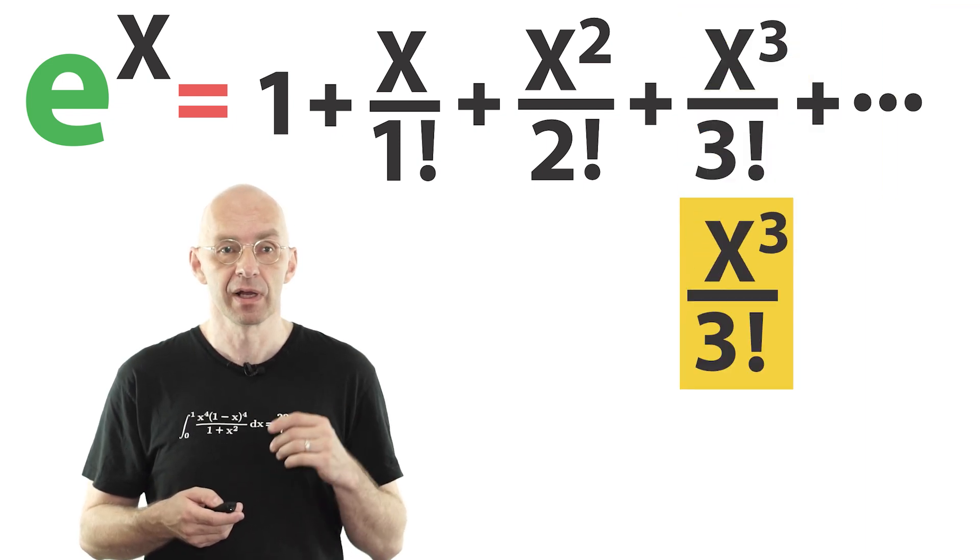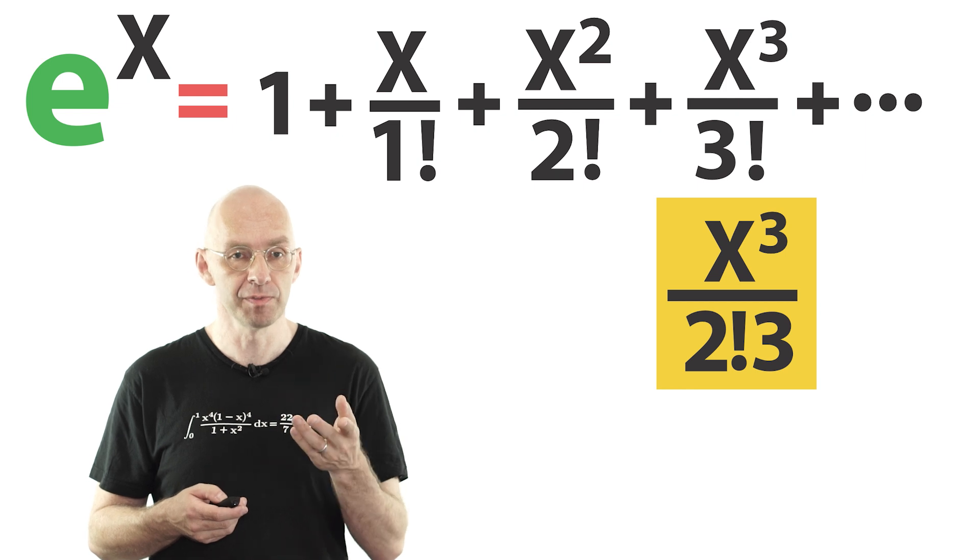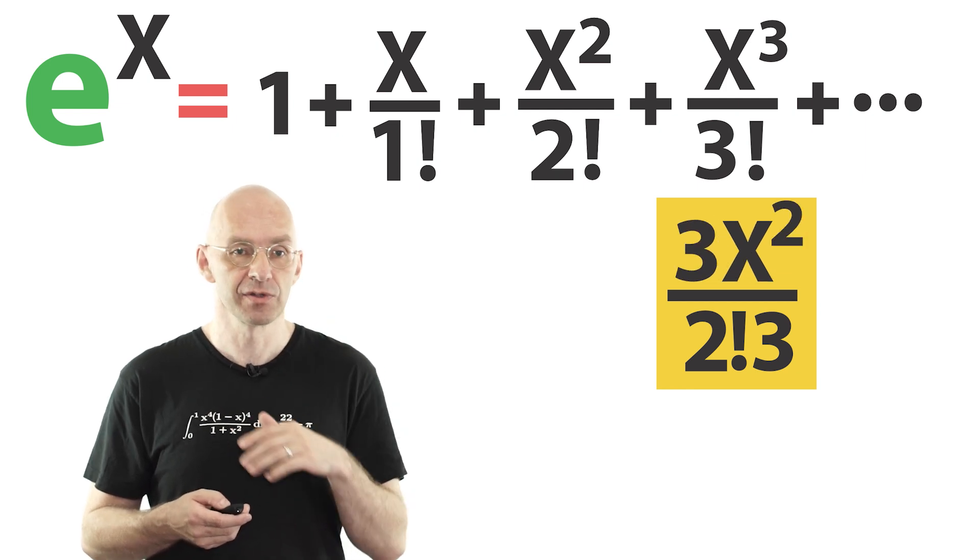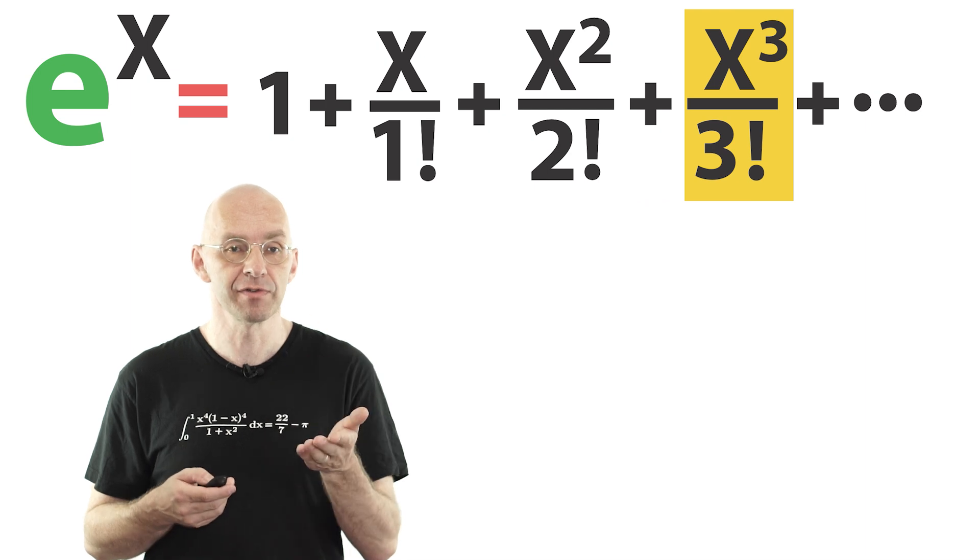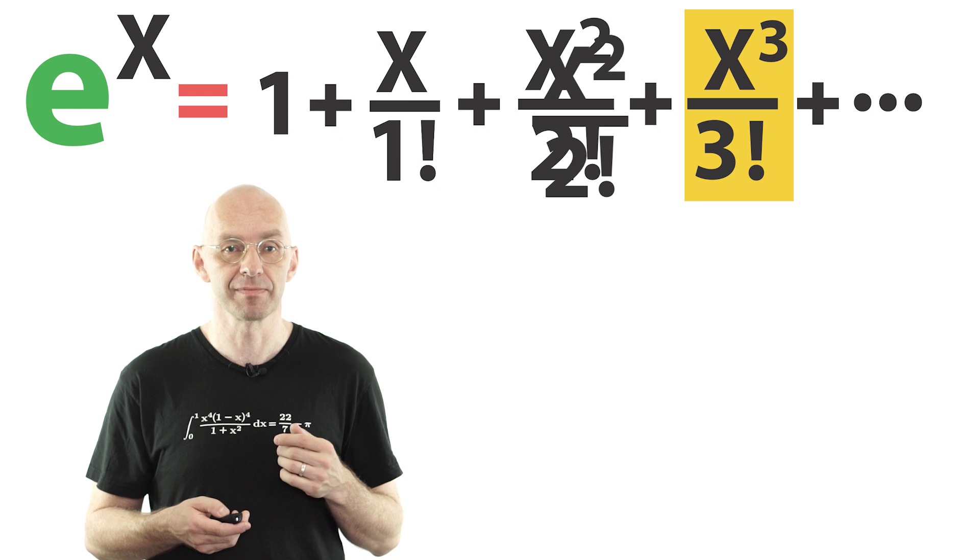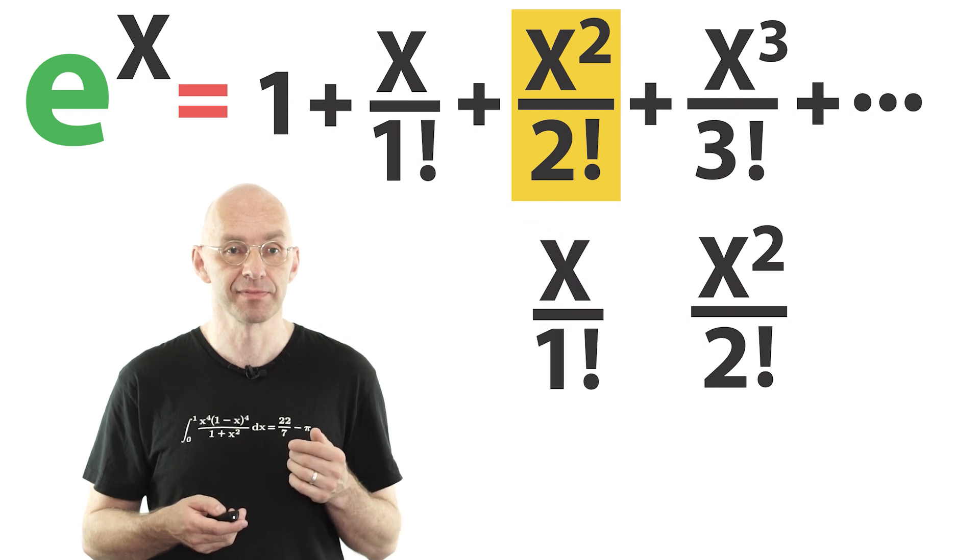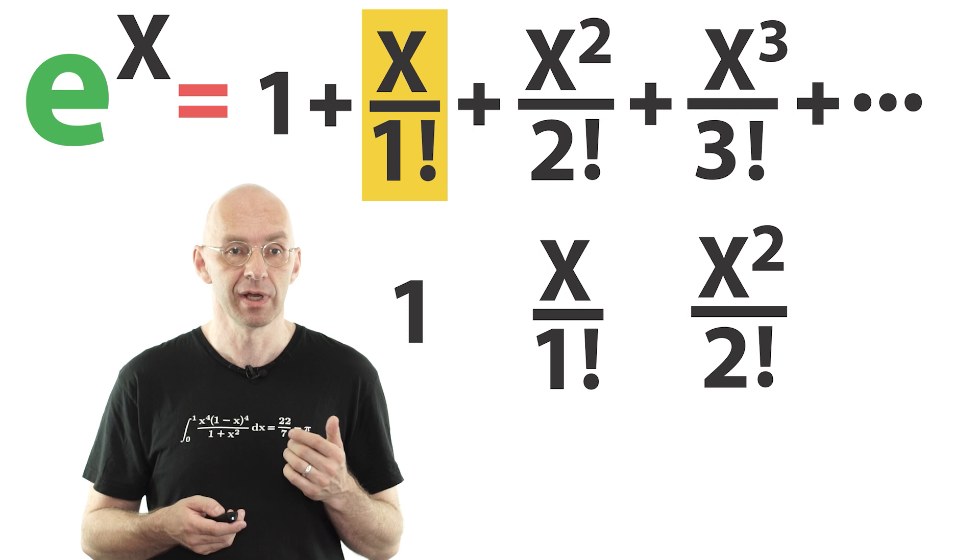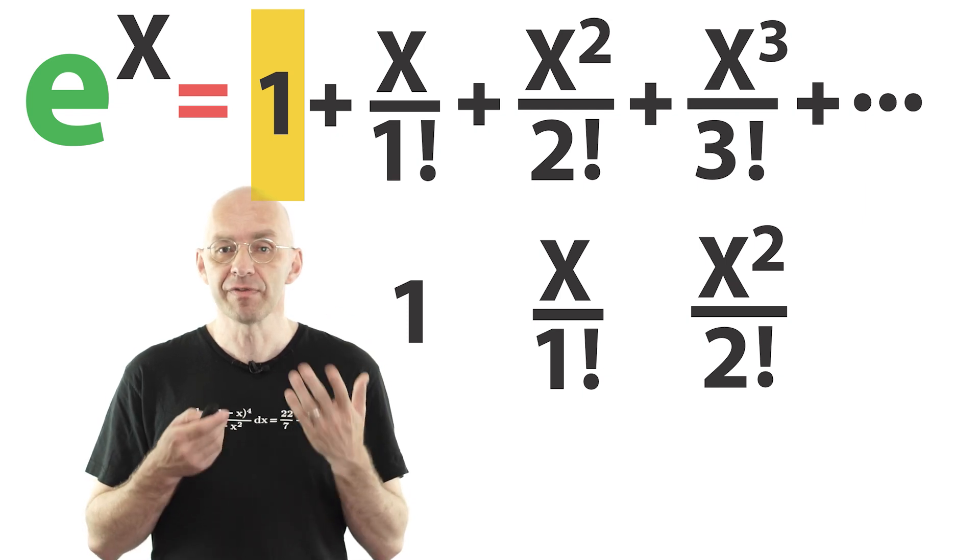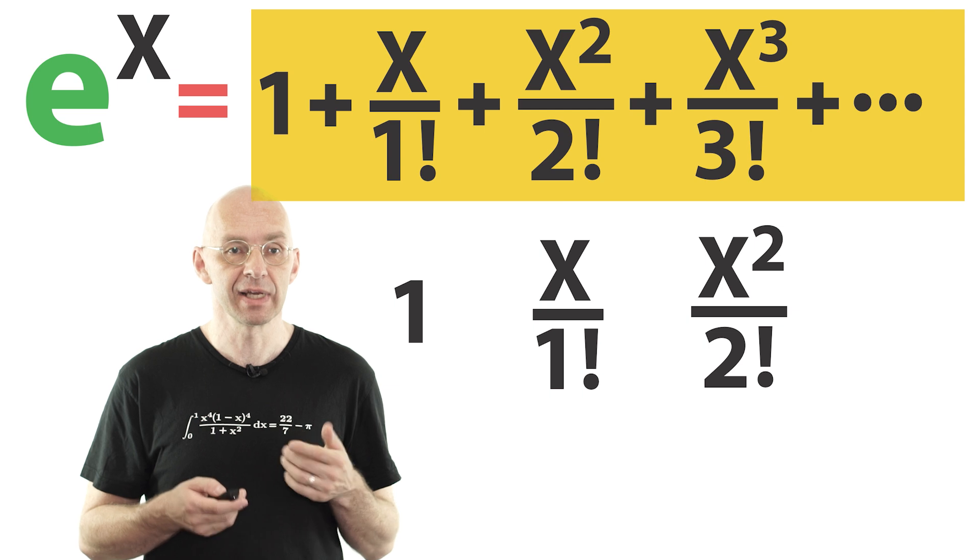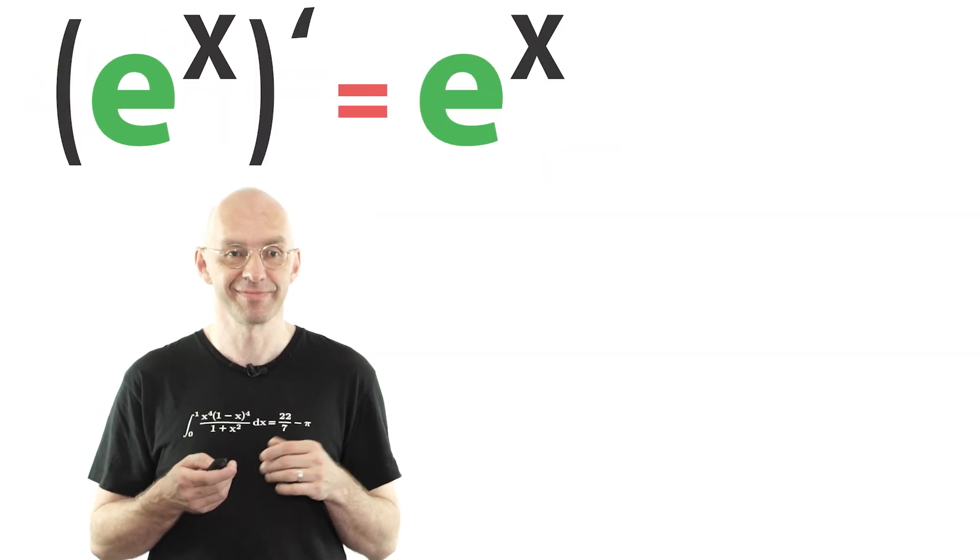3 factorial is 1 times 2, that's 2 factorial times 3. The derivative of x cubed is 3x squared. The 3's cancel, and of course what remains is equal to this term here. So, the derivative of x cubed divided by 3 factorial is simply the previous term. And you can check that the derivative of that previous term is the term before that. And the derivative of that term is 1. And the derivative of 1 is 0, and so on. And so you can see that the derivative of all the junk on the right side is again the right side. Which means that the exponential function is its own derivative. Fantastic, right?